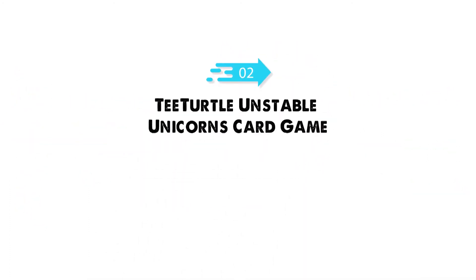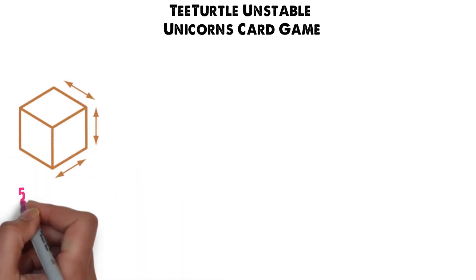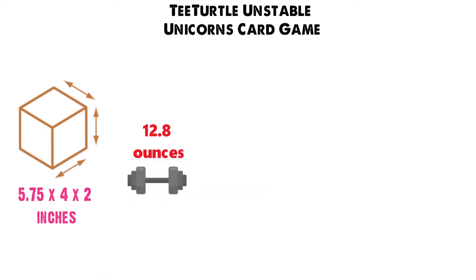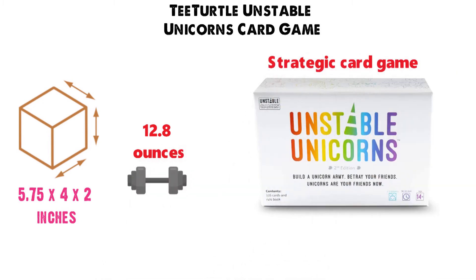At number 2 we have the TeeTurtle Unstable Unicorns Card Game. Dimensions of this product are 5.75 x 4 x 2 inches and it weighs 12.8 ounces. Unstable Unicorns is a strategic card game with an exciting mix of destruction and unicorns.